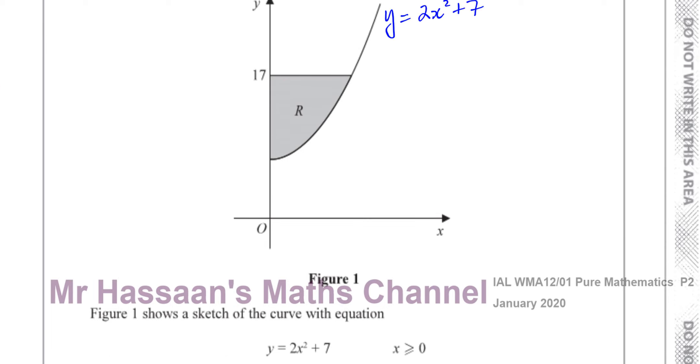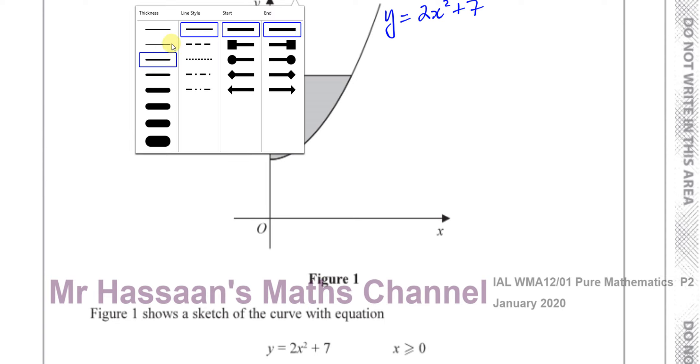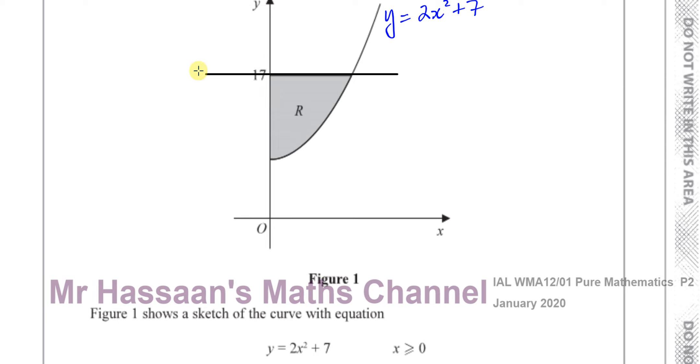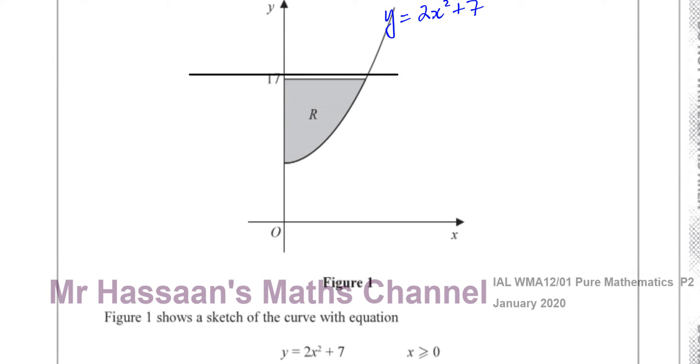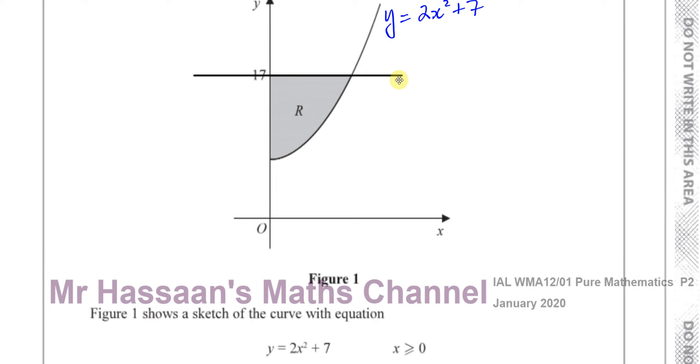This line across is the line, if we were to extend it, it would be the line y equals 17. Or it is the line y equals 17, that is the line y equals 17 here going across.